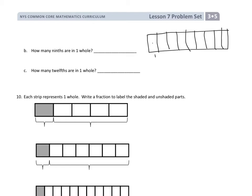There's one ninth, two ninths, three ninths, four ninths, five ninths, six ninths, seven ninths, eight ninths, nine ninths. So we could put that as nine over nine is one whole — nine ninths.